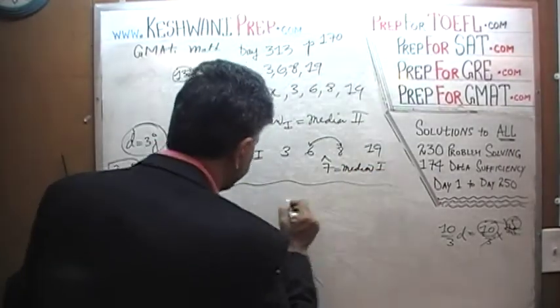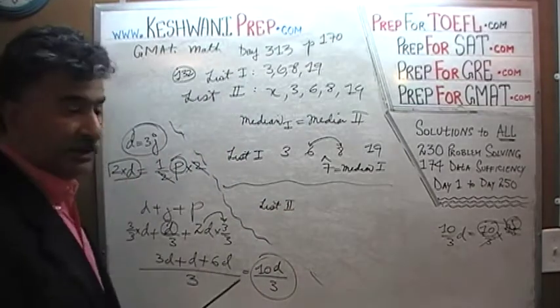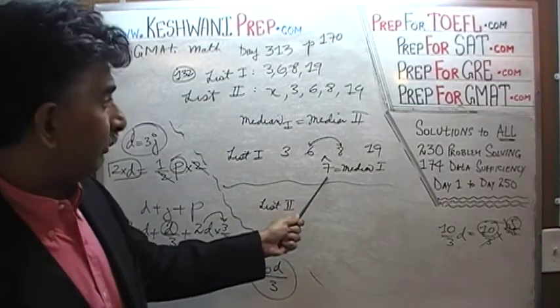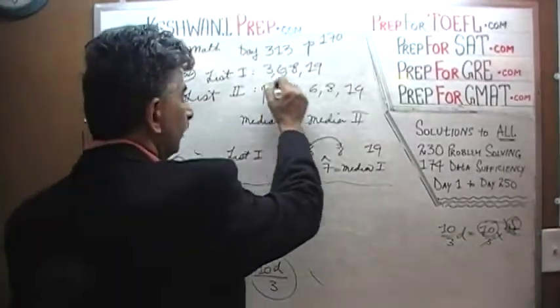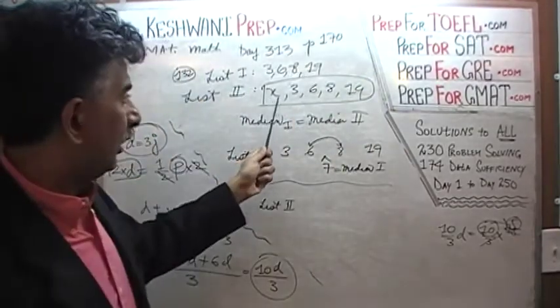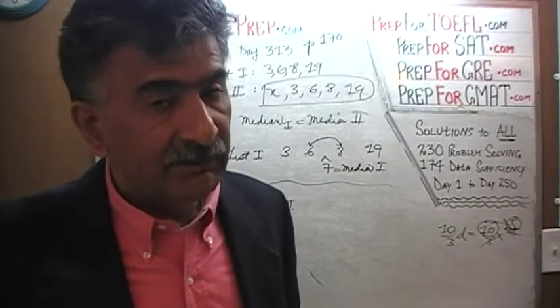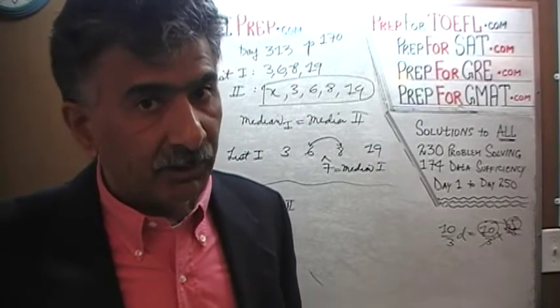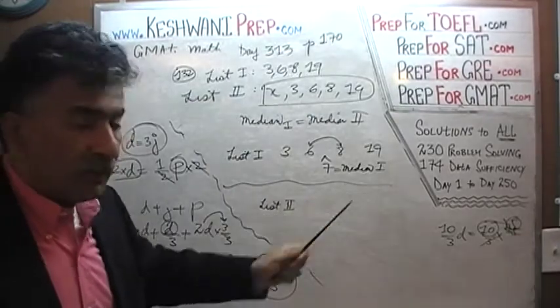Now here is our list 2. In list 2, median also has to be 7. Okay keep listening, median also has to be 7. But there is no 7 here. Do you see any 7 in this list? There are 5 numbers: 1, 2, 3, 4, 5. Since there are 5 numbers, that means the median is the middle number, and that middle number has to be 7 because the medians are equal to each other.